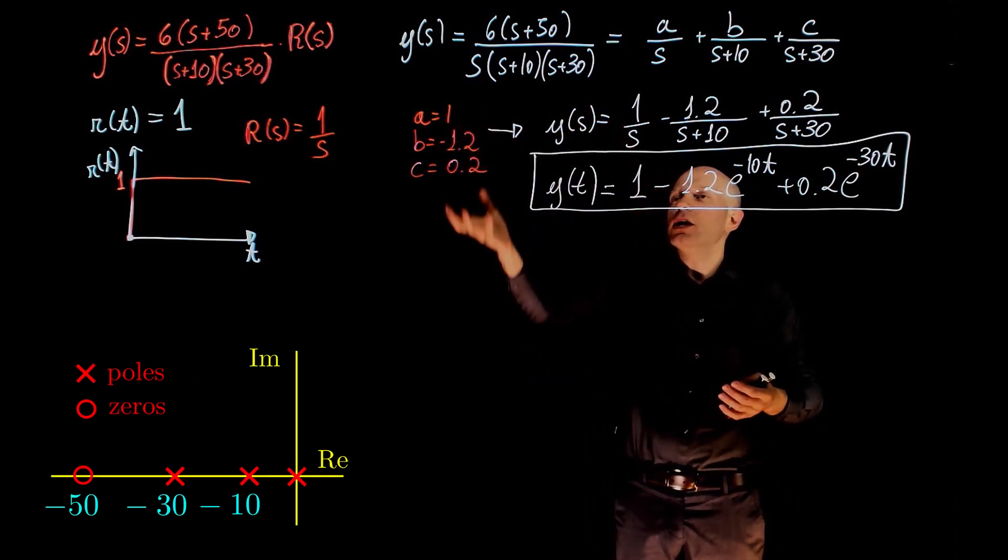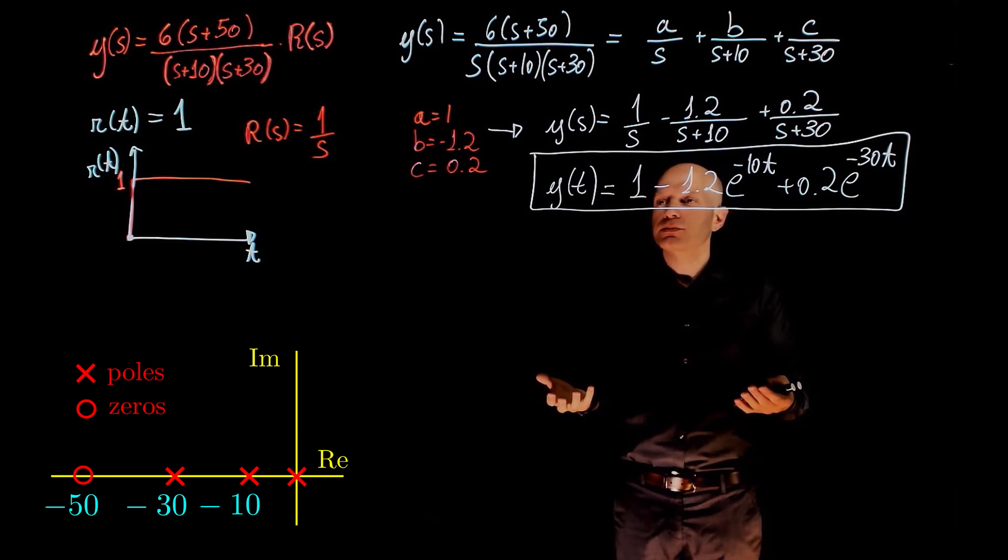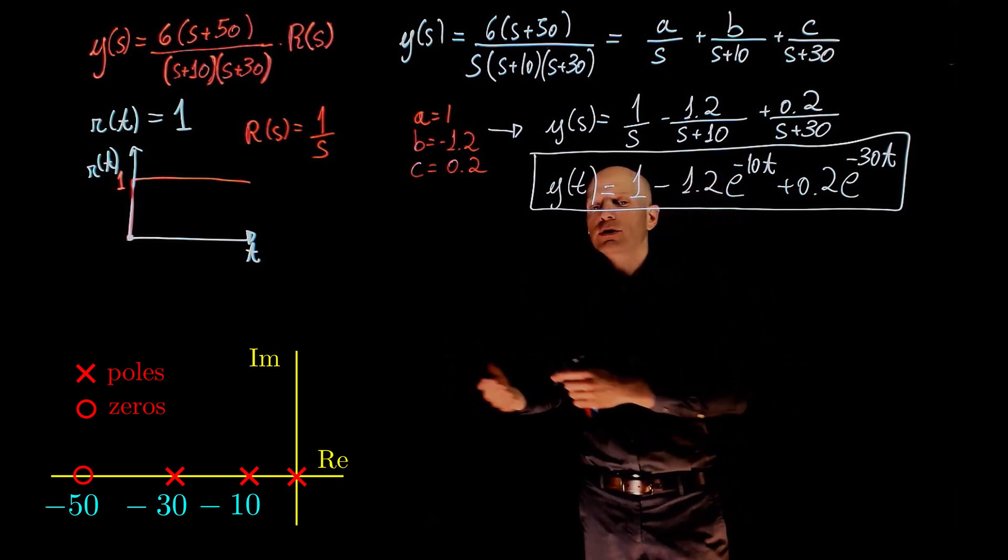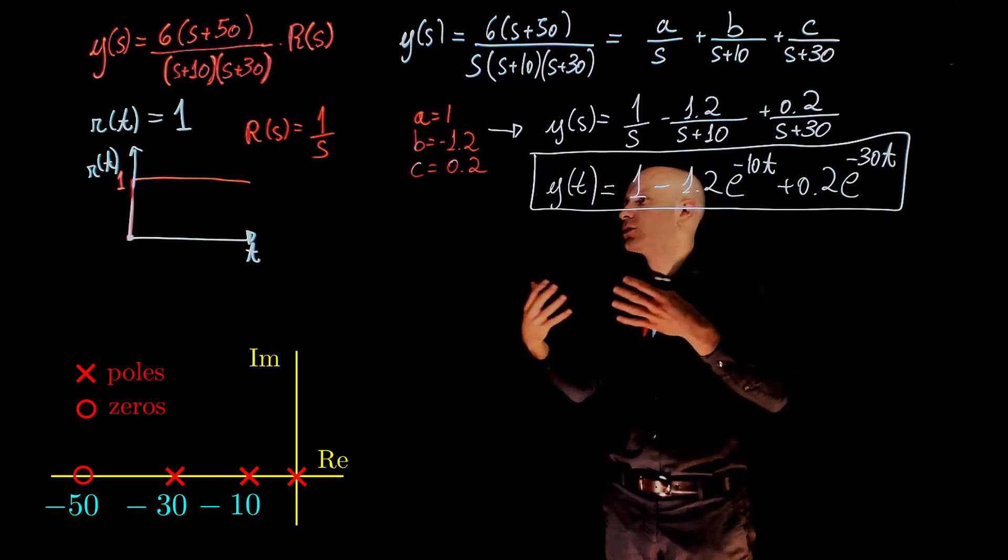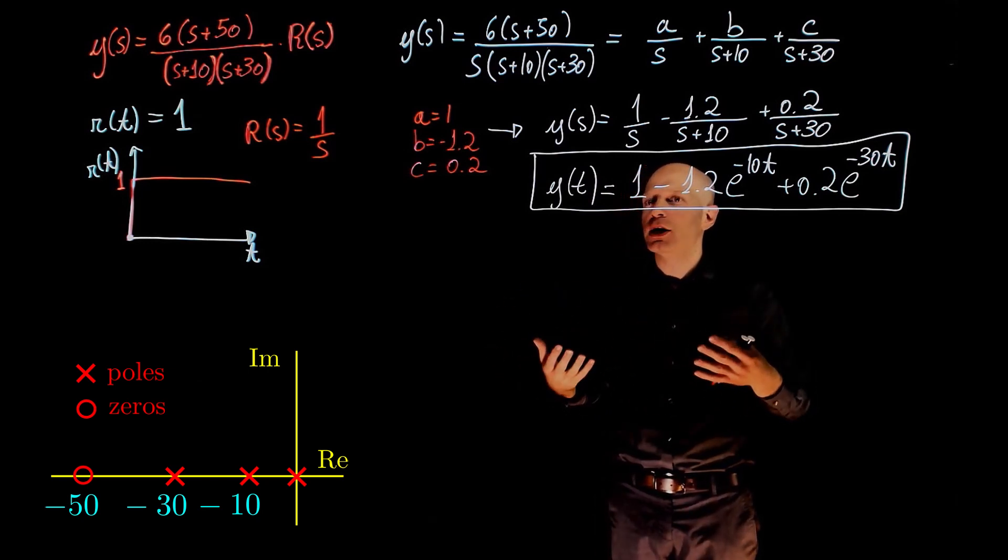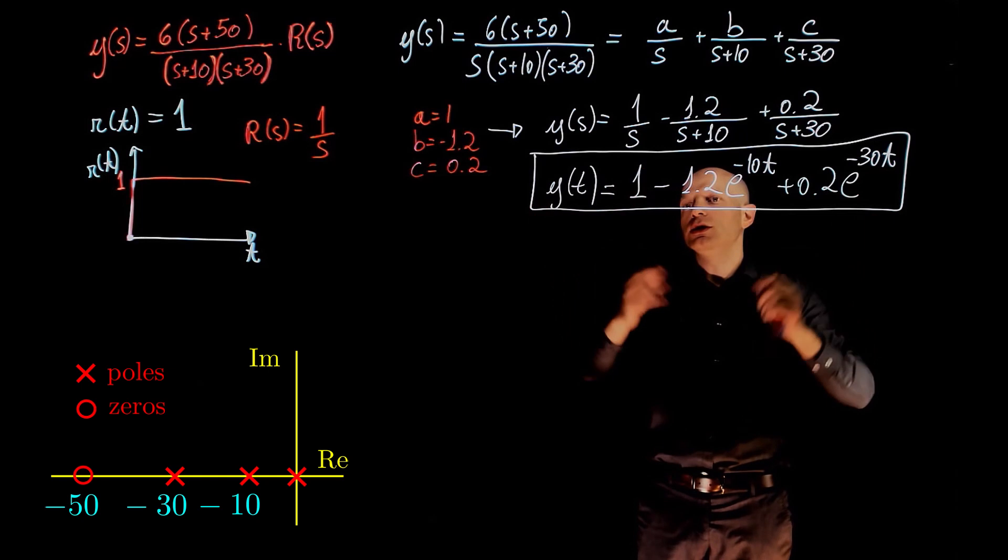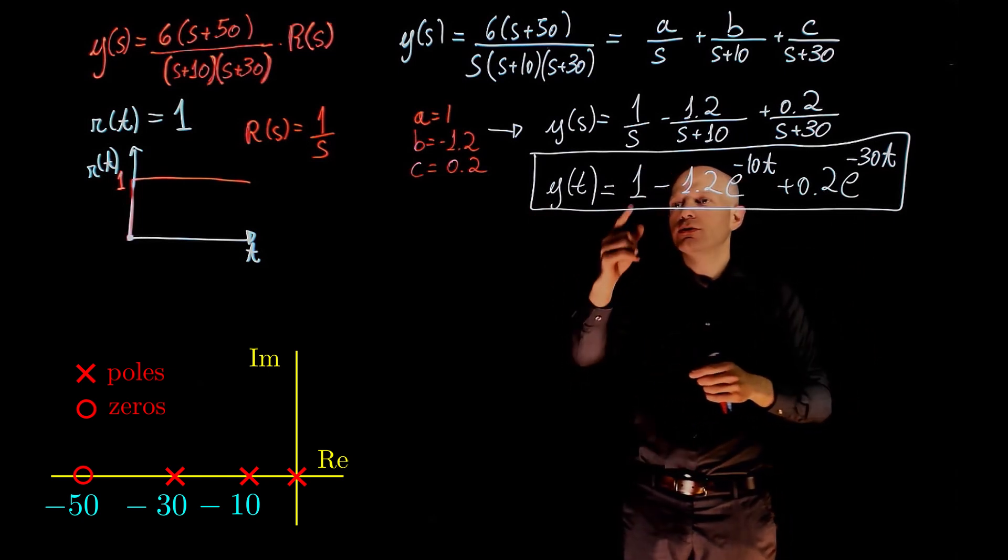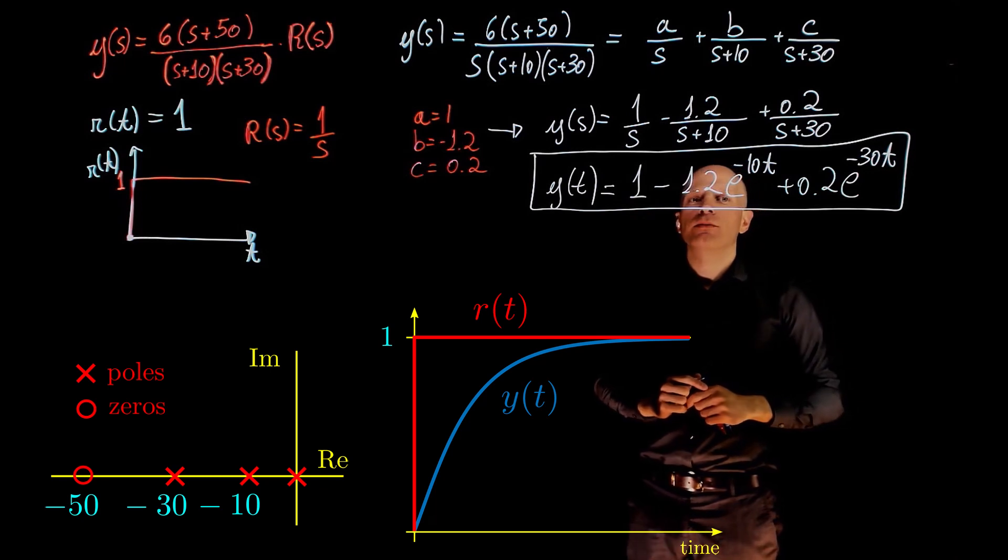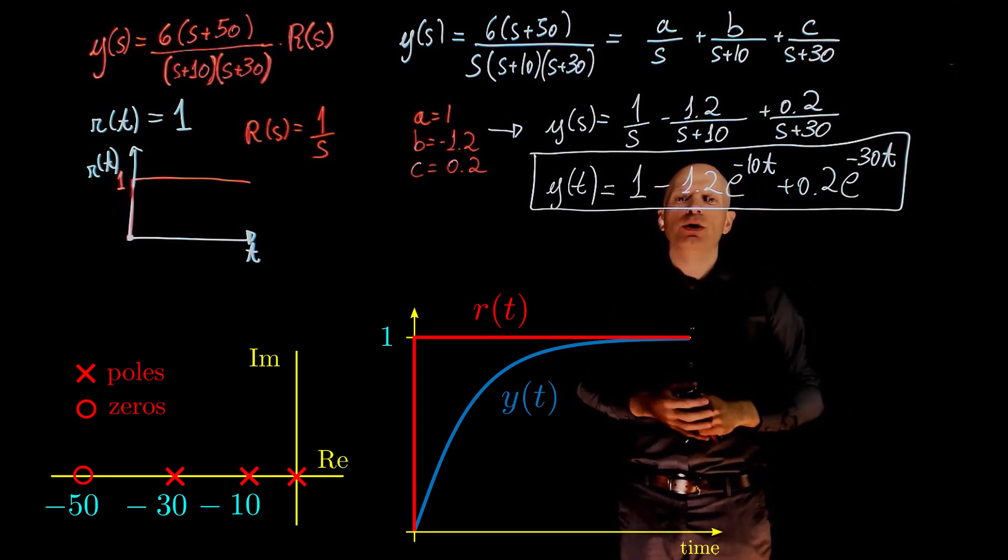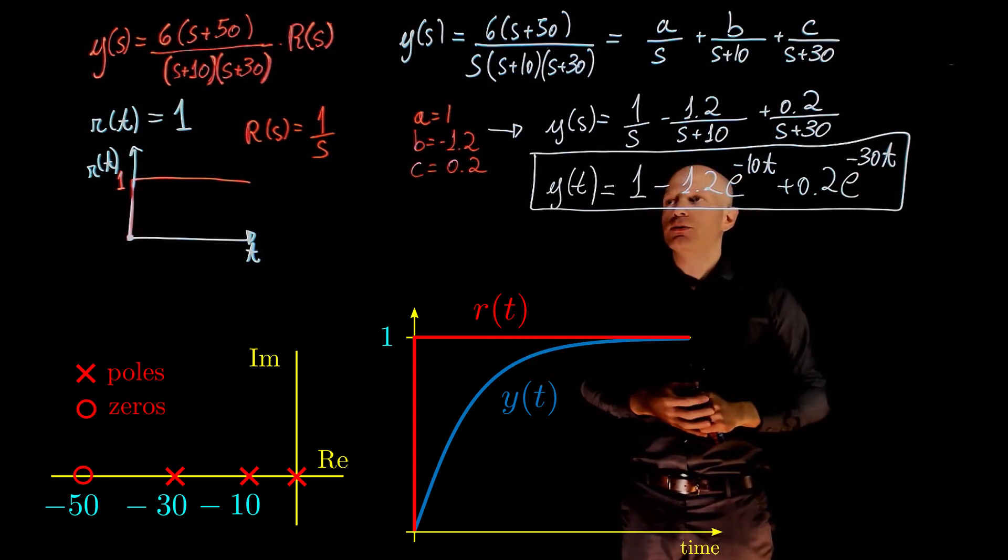There is no imaginary component in the poles, and according to the definition of Laplace transform, this should result in a time response that is purely exponential. And that's exactly what we see here. The printer goes from 0 to 1 following an exponential curve, and there is no sinusoidal component to that time response.